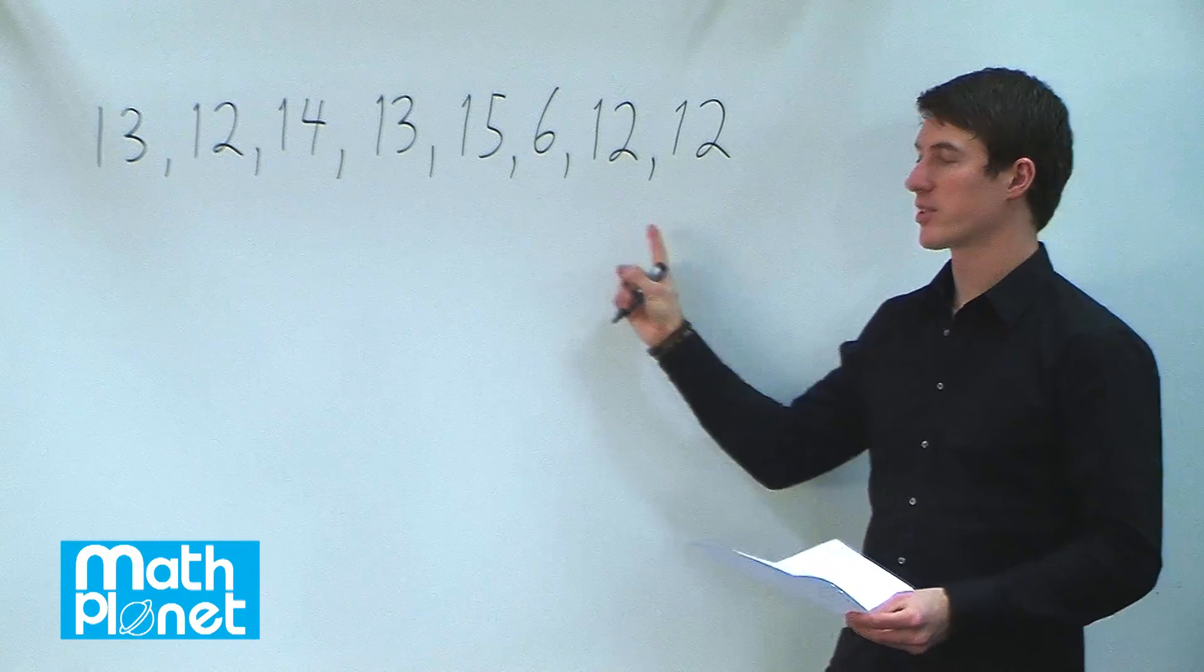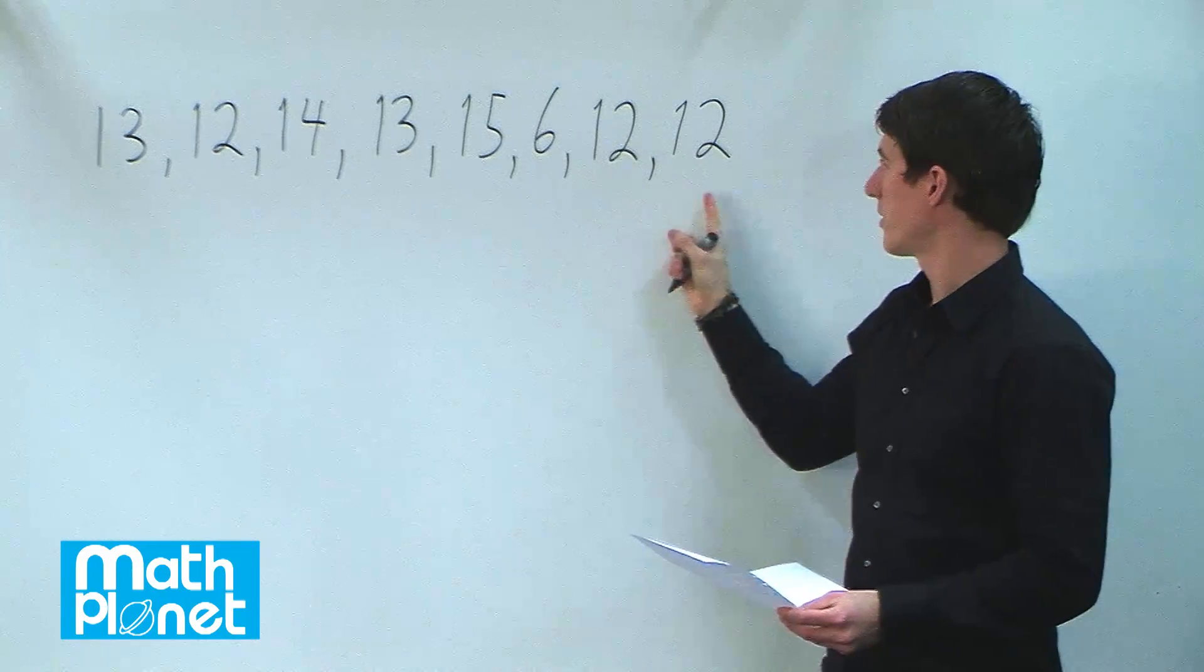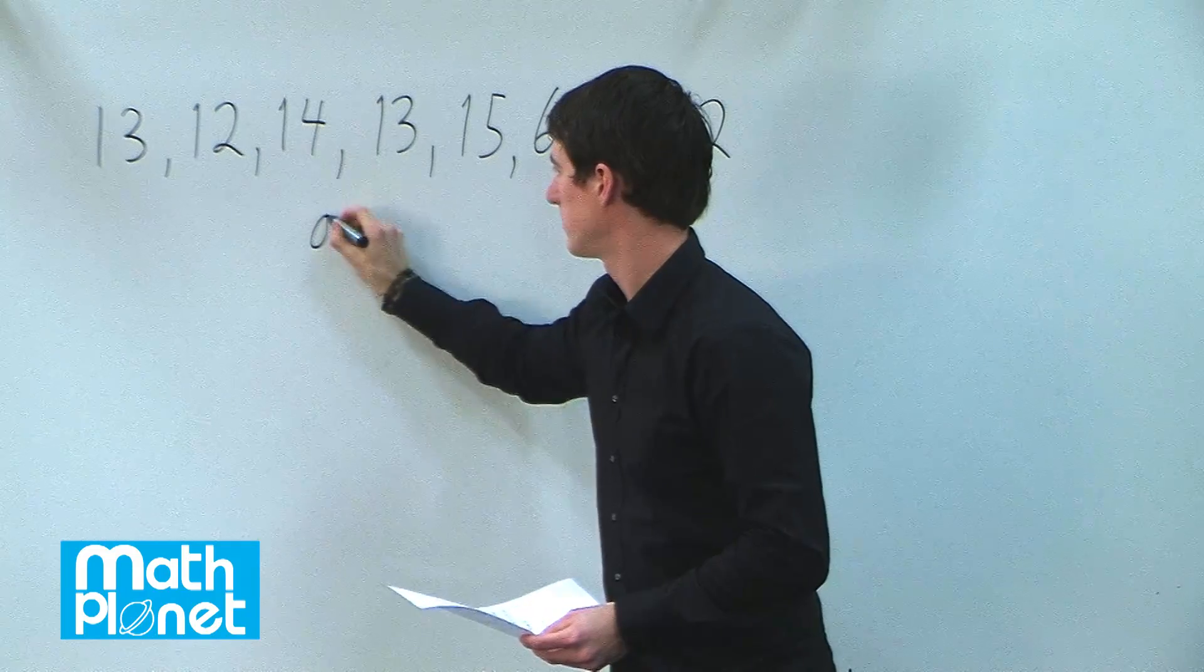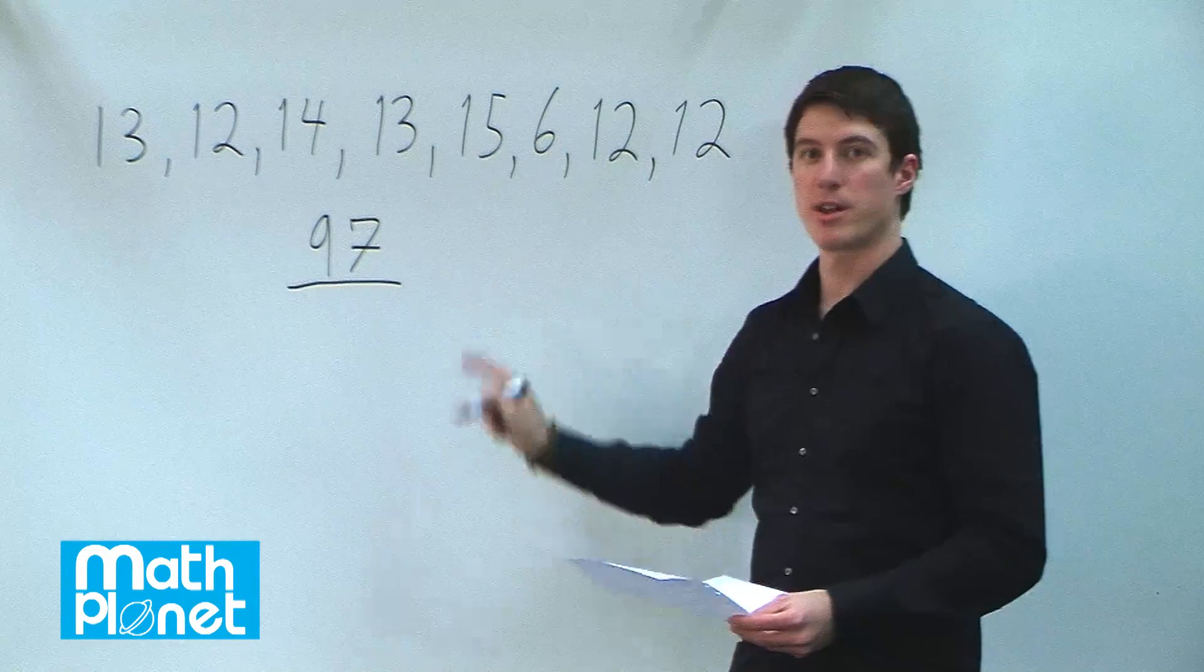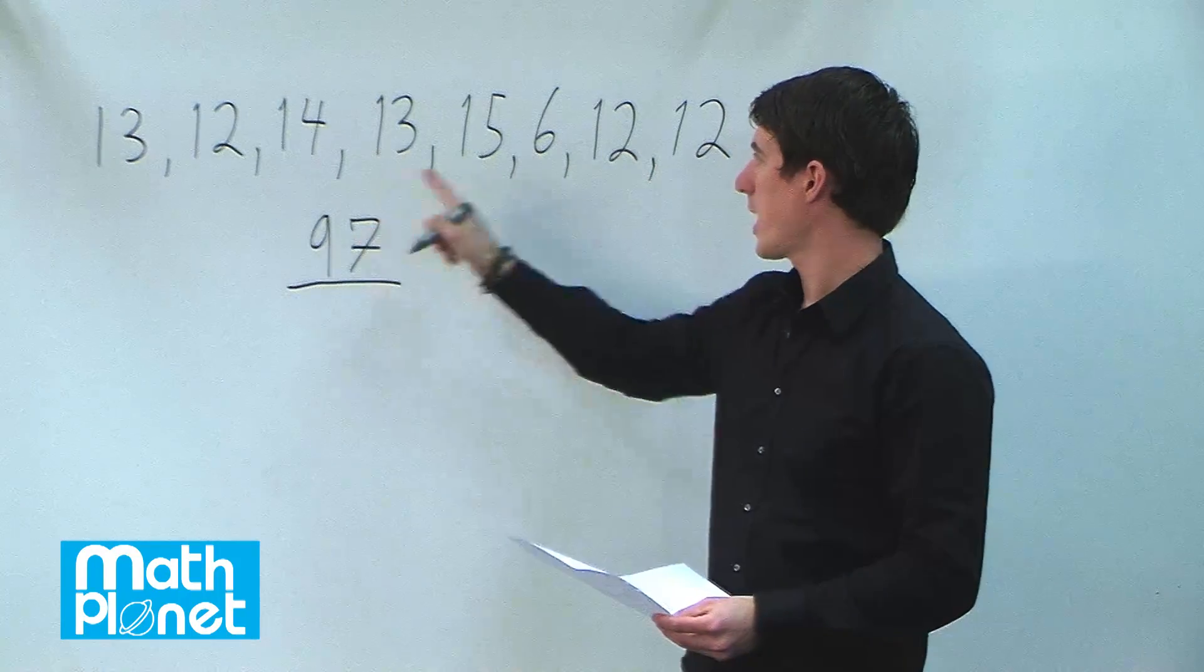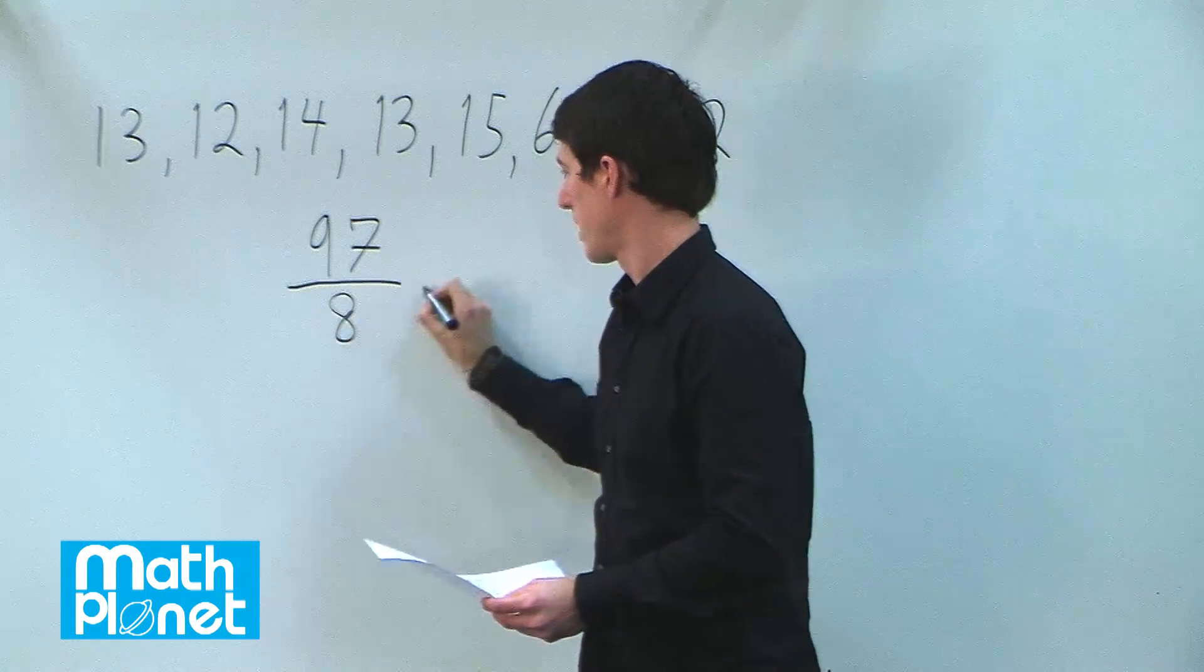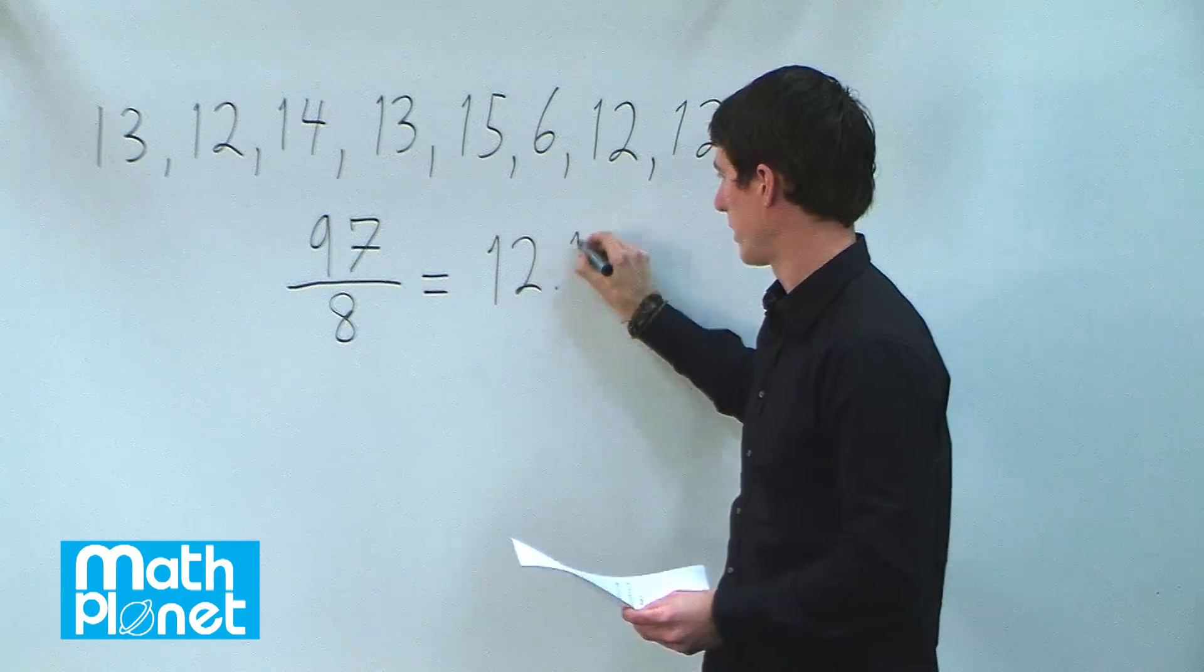So the mean is just the sum divided by the total number. In this case, if you find the sum of these you get 97. And then you have to divide by the number of numbers in this list. There are eight numbers here, so we just divide 97 by 8, which is 12.125.